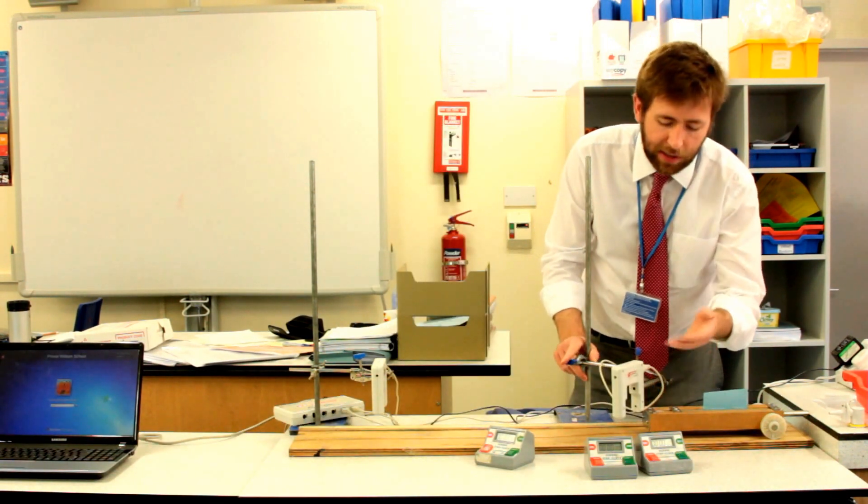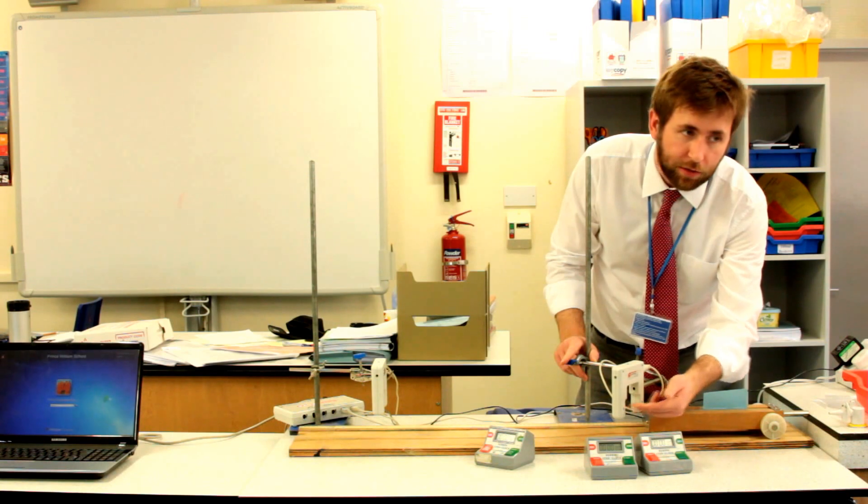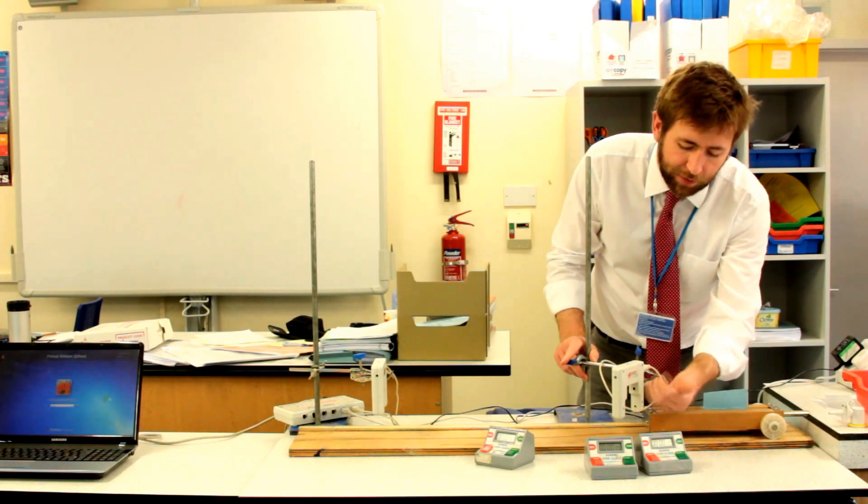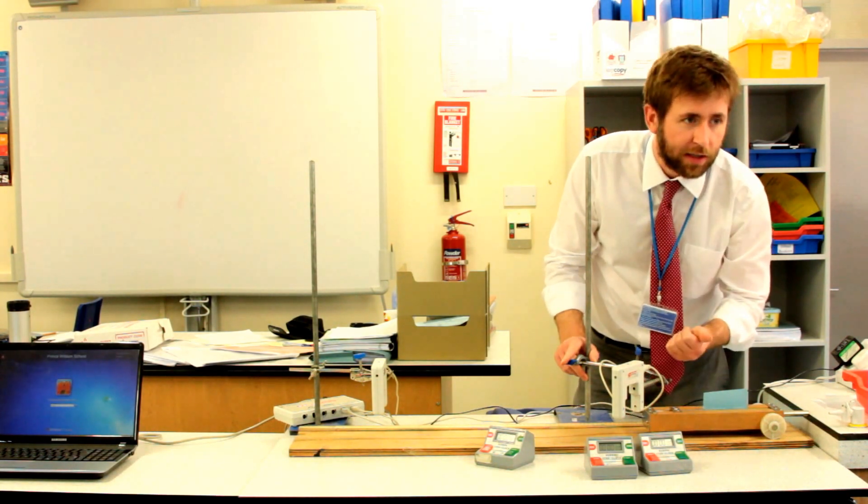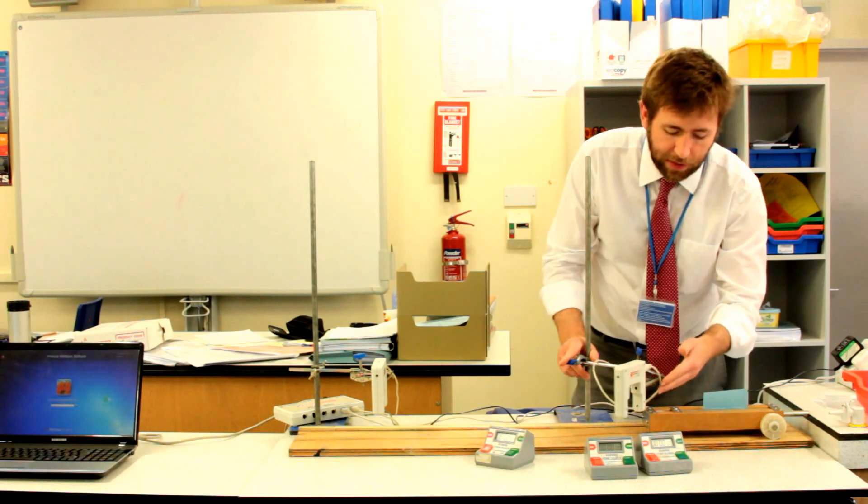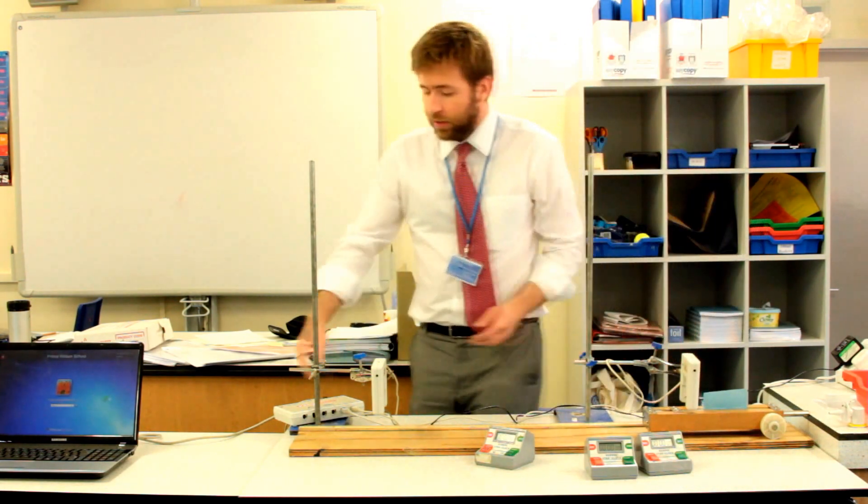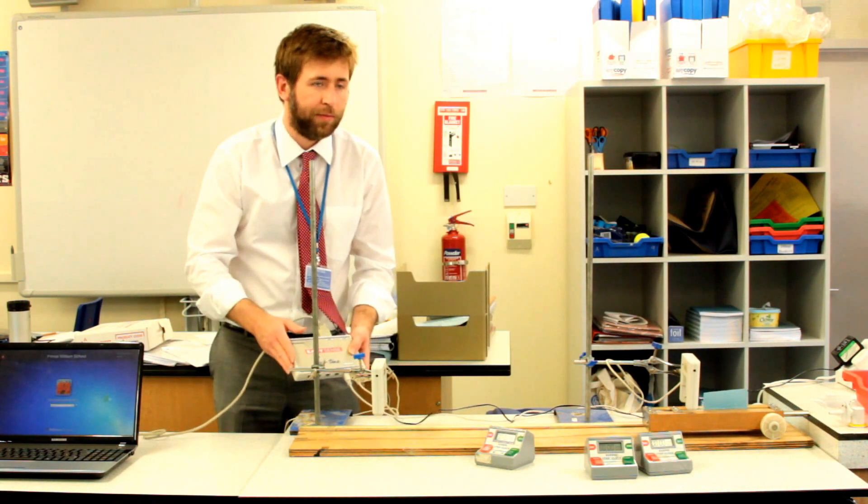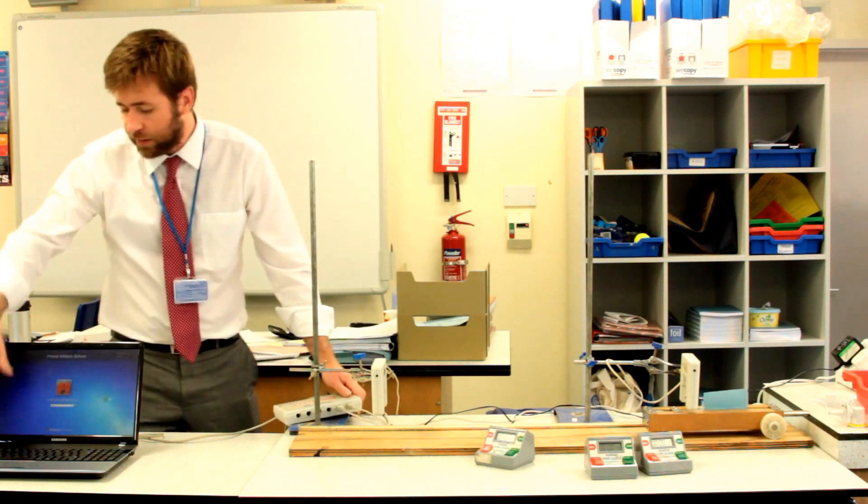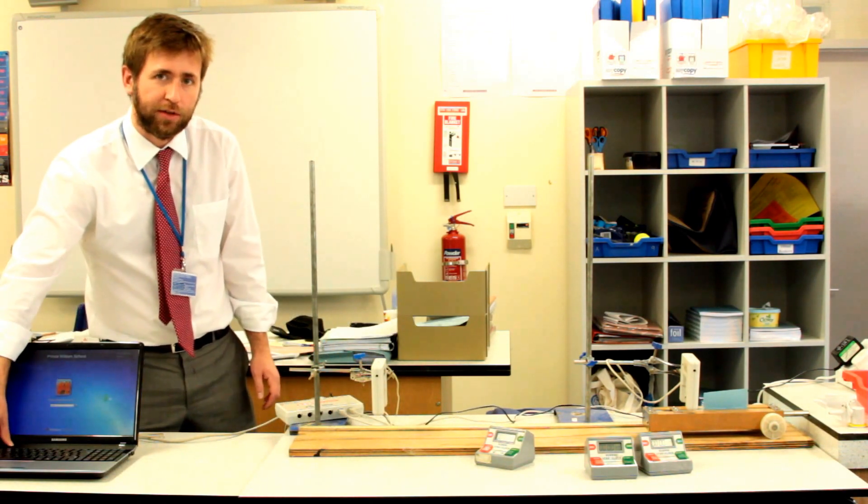What a light gate is, is a beam of light from one side to the other. Whenever that beam is broken, the light gate takes a reading. That reading is then sent to the control box here. The control box is then sending information to the computer, which can process it.